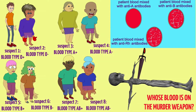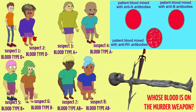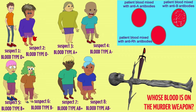If there was clumping in the B and Rh wells, that means the antibodies which bind to B found something to stick to, so there was B in that individual's blood type. If the anti-Rh antibodies found something to stick to, that means the blood was Rh positive — so that blood would be B positive. In these various scenarios, can you use blood type to solve this murder mystery?